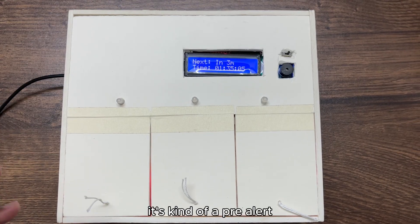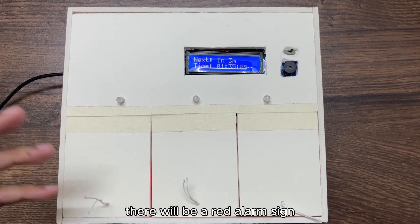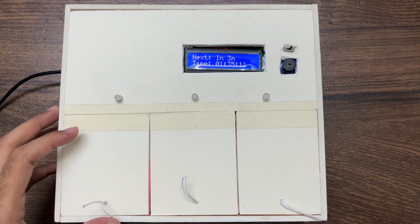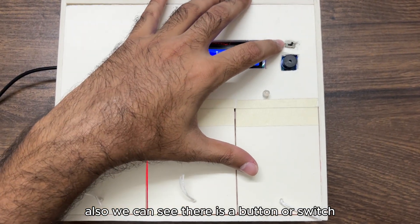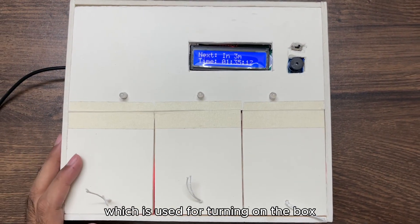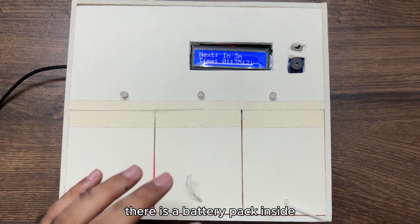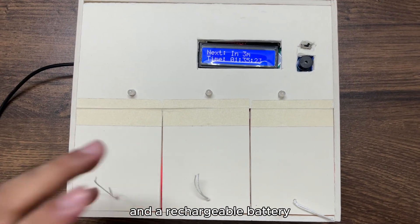It's kind of a pre-alert, and at the time of taking medicine there will be a red alarm sign. We can see there is a button or switch which is used for turning on the box. We can turn this on or off based on the battery. There's a rechargeable battery inside.